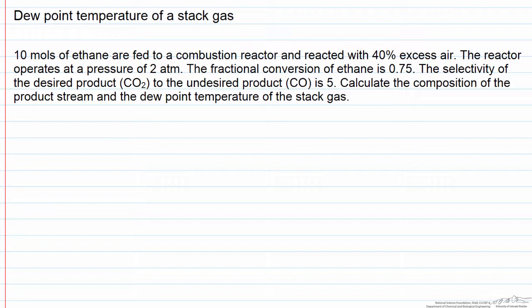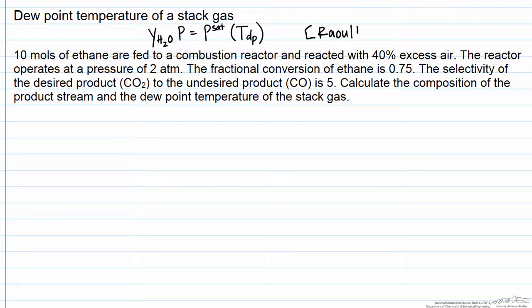In this screencast we're going to look at a combustion reaction and solve for not only the amount of components in the product gas, but also the dew point temperature of the product or stack gas. Generally the only condensable species in the stack gas is water, so to find the dew point temperature we're going to use Raoult's law, which says the partial pressure of water is equal to the saturated pressure of water at the dew point temperature. So in order to apply this equation, what we're going to need to find is the mole fraction of water.